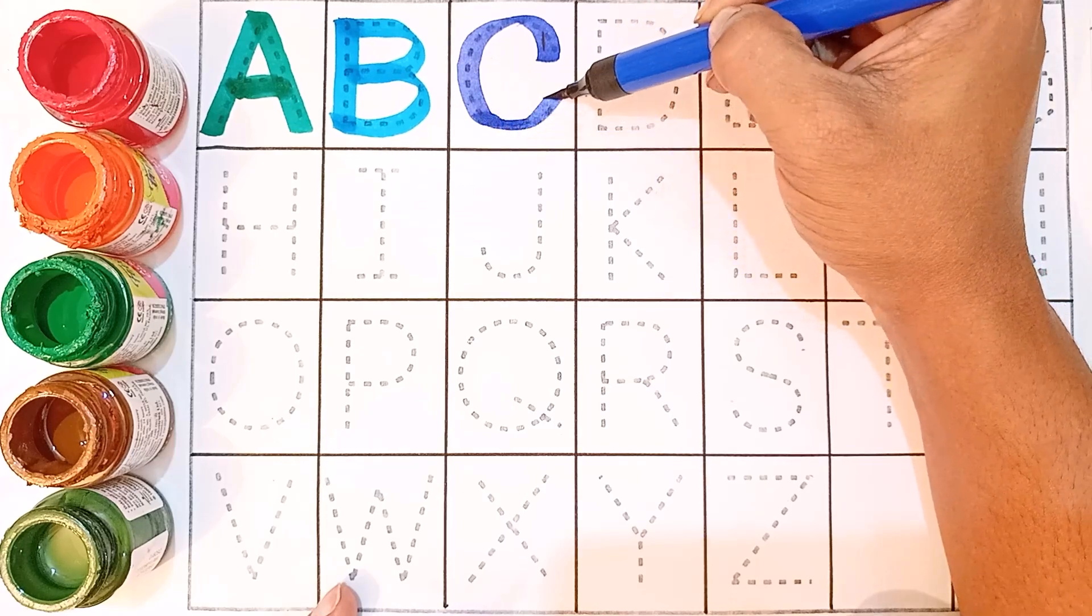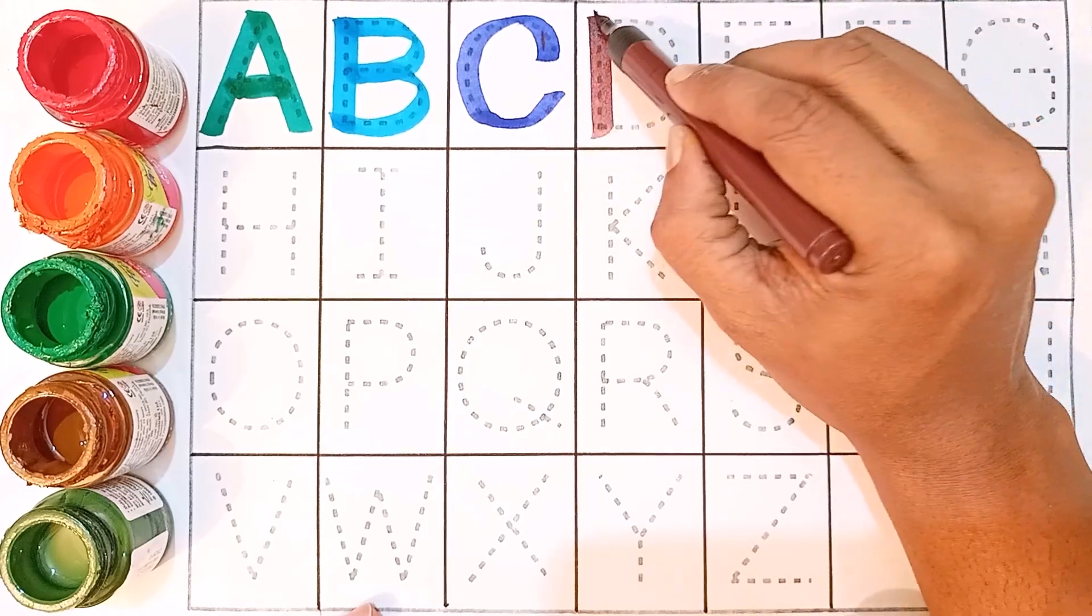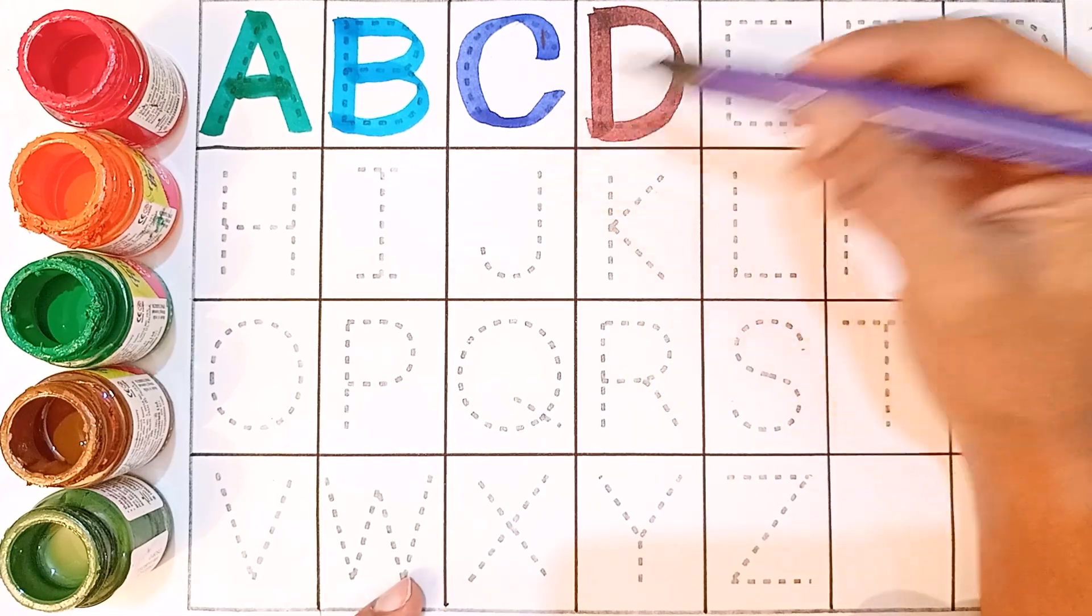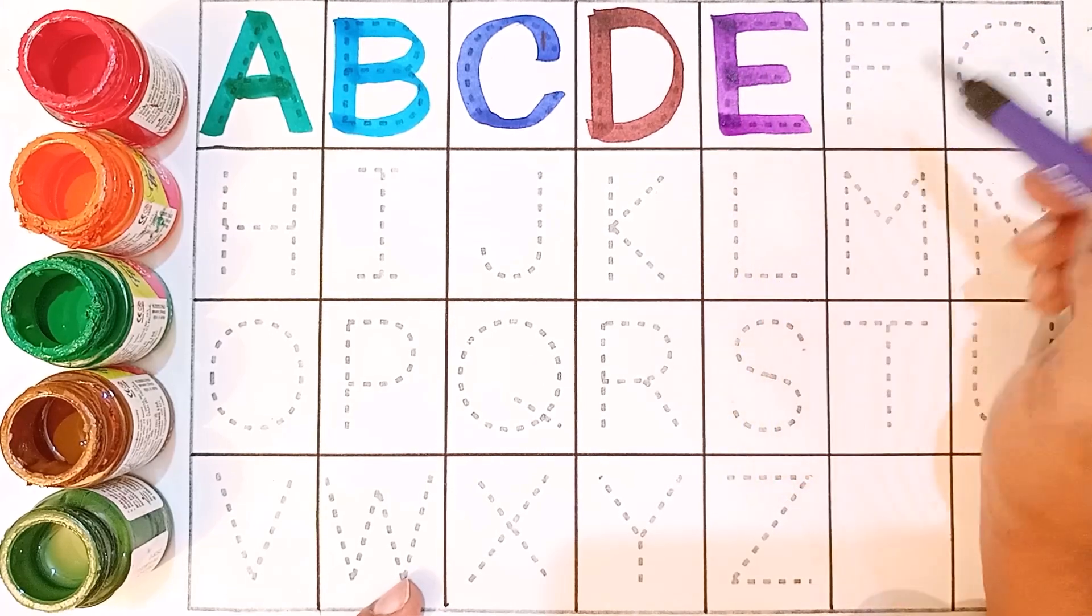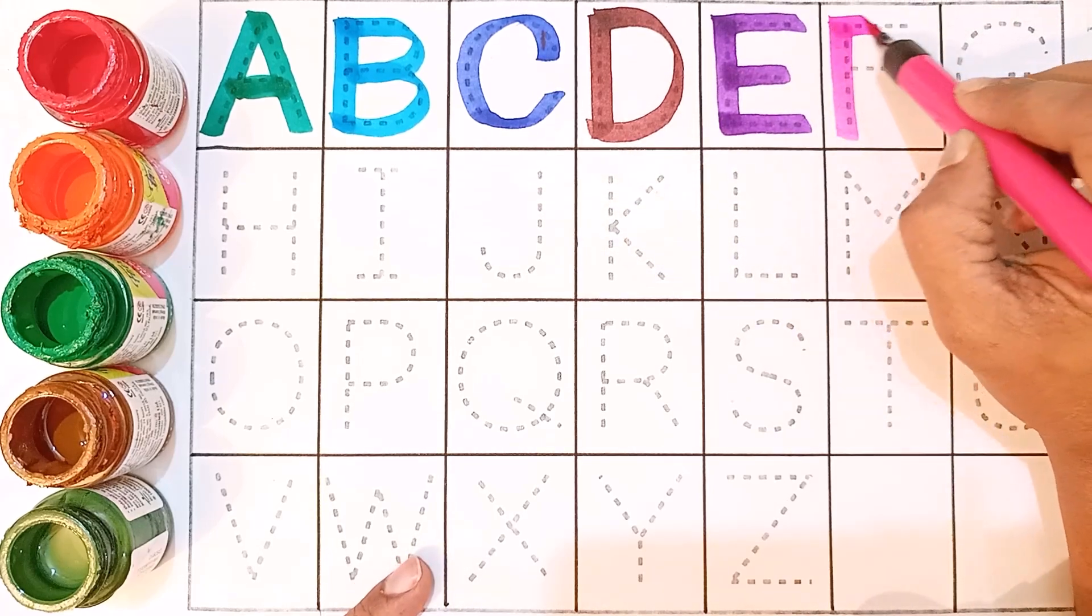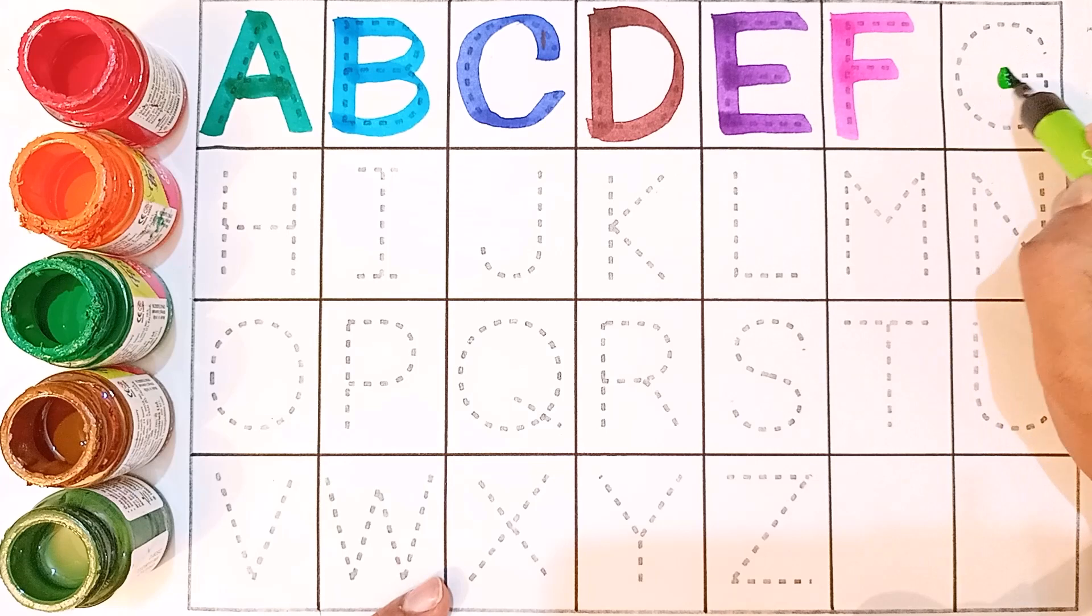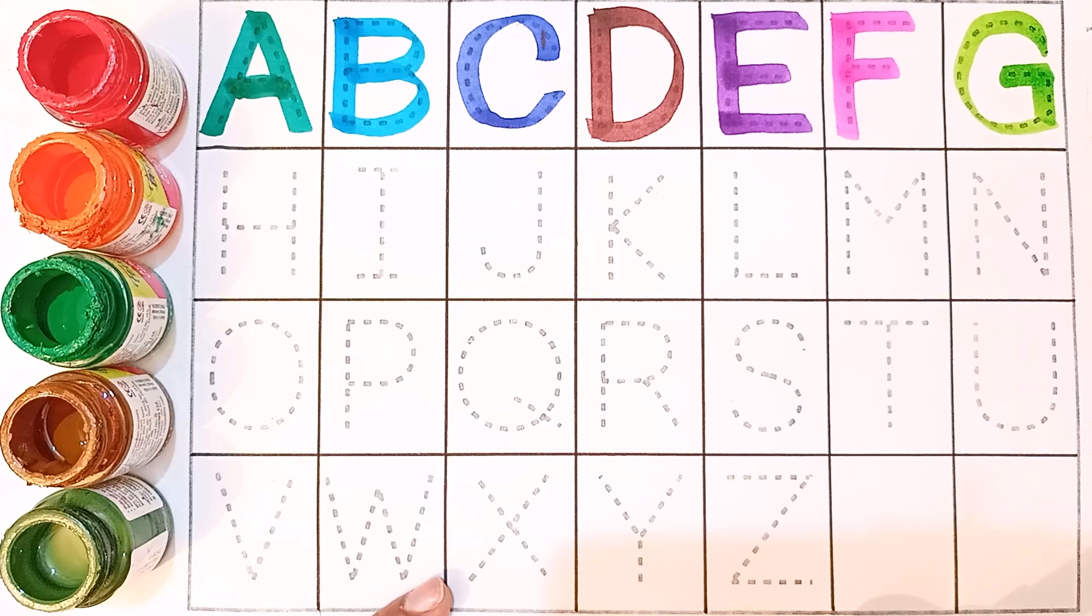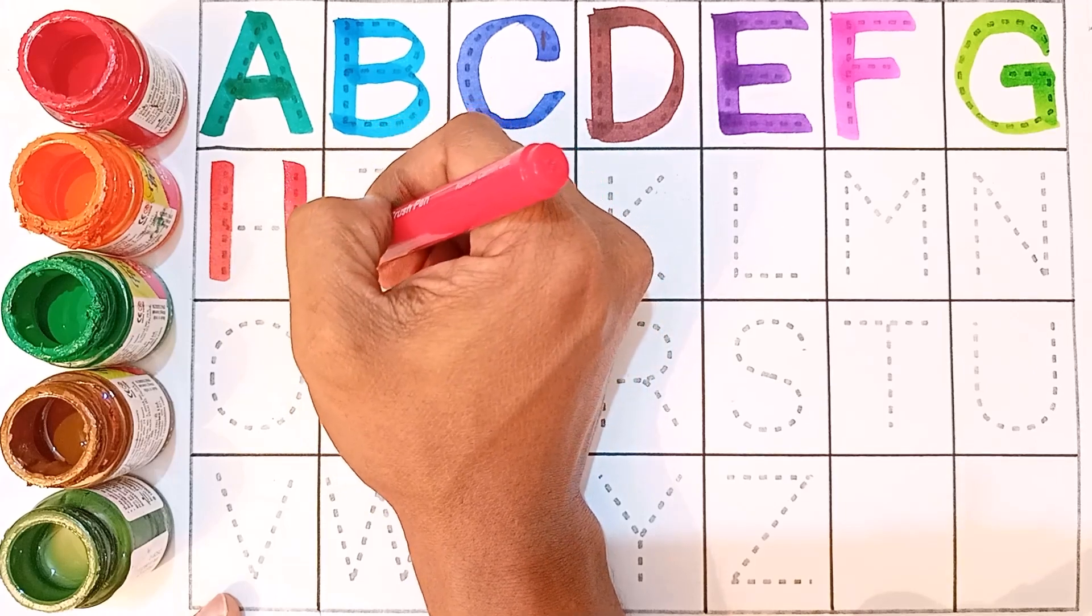C for Cat. Brown color. D for Dog. Purple color. E for Eat. Pink color. F for Fish.